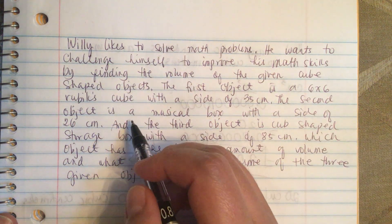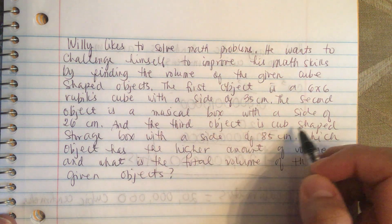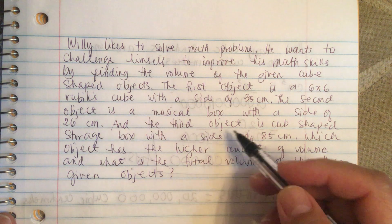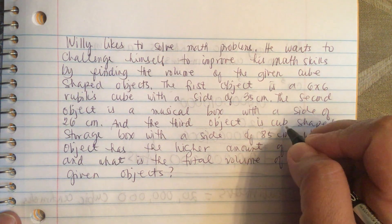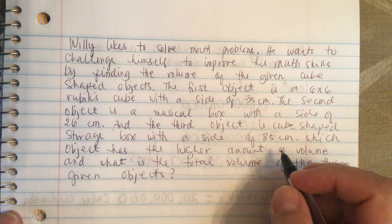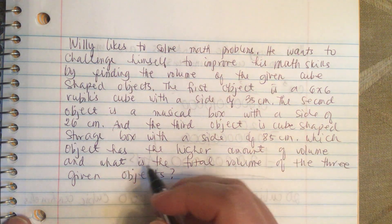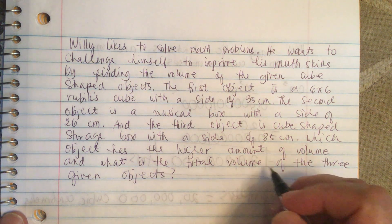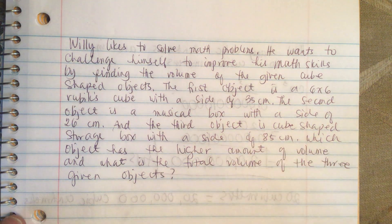The second object is a musical box with a side of 26 centimeter and the third object is a cube shape storage box with a side of 85 centimeter. Which object has the higher amount of volume and what is the total volume of the three given objects?